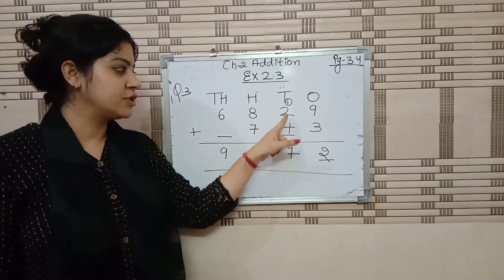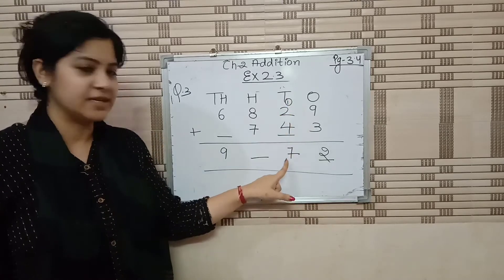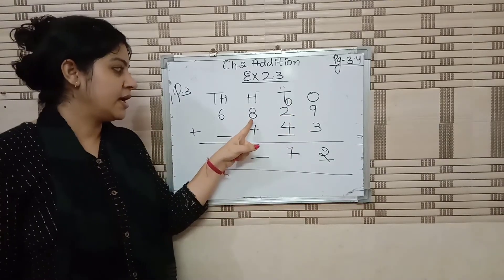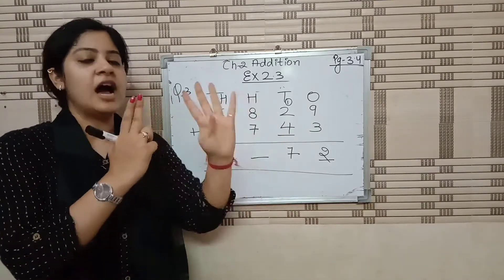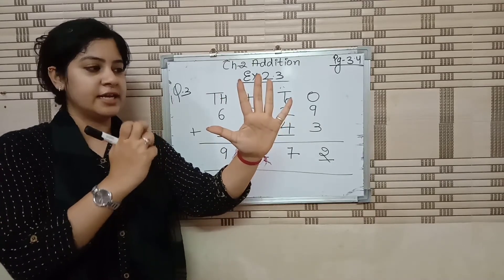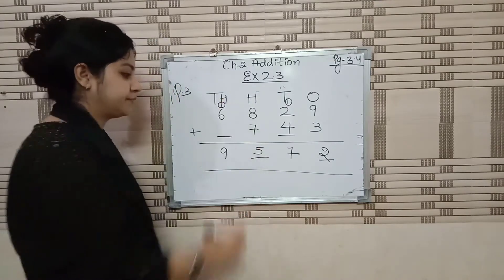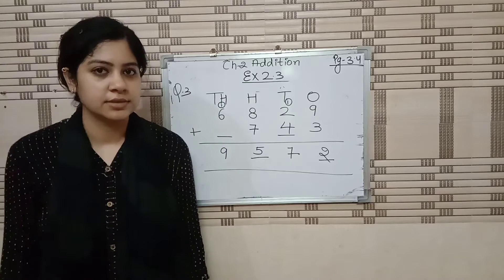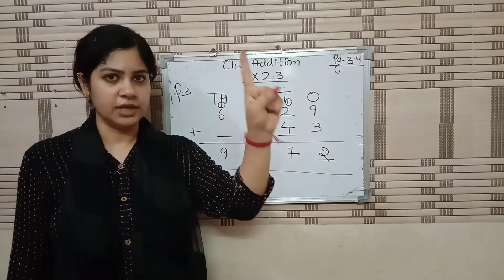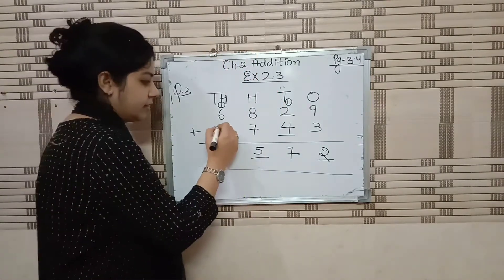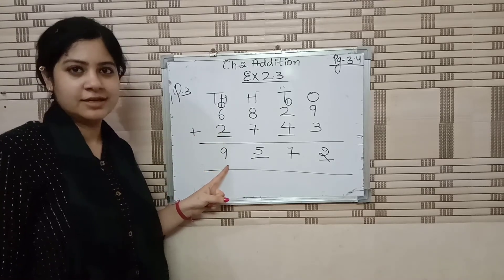Check: 4 plus 2 is 6, plus 1 carry is 7. Seven is the answer — correct. Now 8 plus 7 — 8 in mind, 7 on finger — after 8: 9, 10, 11, 12, 13, 14, 15. So 5 over here and 1 carry forward. 6 plus 1 is 7. Now count from 7 up to 9: 8, 9 — that's 2. Write 2 over here: 6, 7, 8, 9 — nine is the answer. Clear?